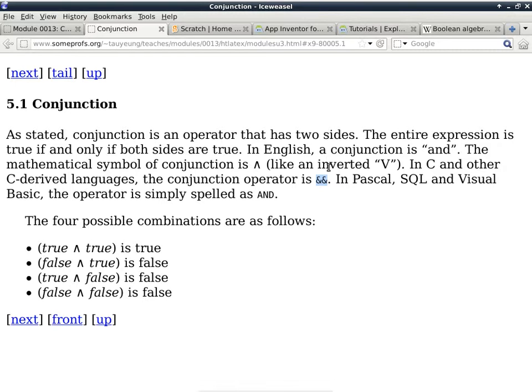If you confuse those two, your program may work sometimes and doesn't work other times, which will be very confusing. Make sure you remember for logical conjunction it is double ampersand. In most other programming languages, it is simply spelled out as A-N-D.